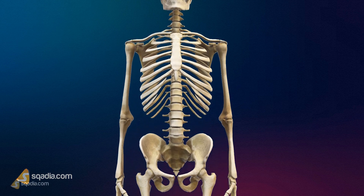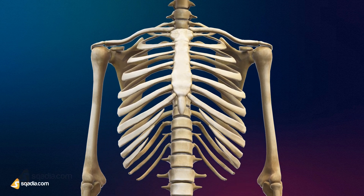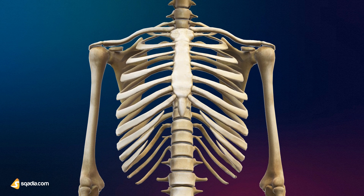Let's look at the names and positions of the bones that we will discuss in this video. The upper limb consists of the scapula, also called the shoulder blade, and the clavicle, also known as the collarbone.